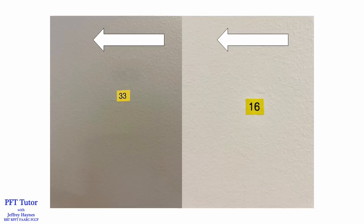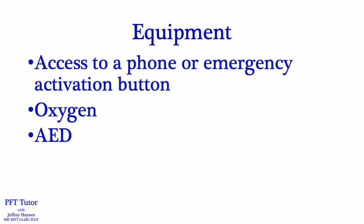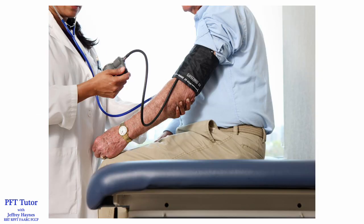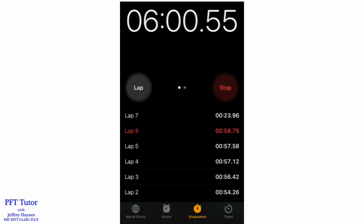We also have the hallway labeled with meter markers in both directions, because the last lap when the 6-minute mark is achieved will probably be a partial lap, and labeling the hallway makes it easier to determine the distance walked. Other equipment needed for safety includes access to a phone or emergency activation button, oxygen, and an automated external defibrillator (AED). You'll need a pulse oximeter to monitor SpO2 and heart rate, and you can use a wrist oximeter.